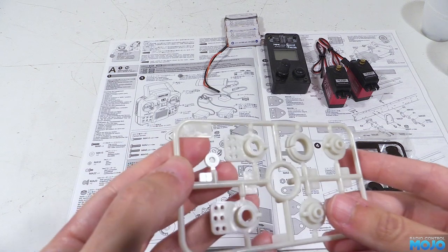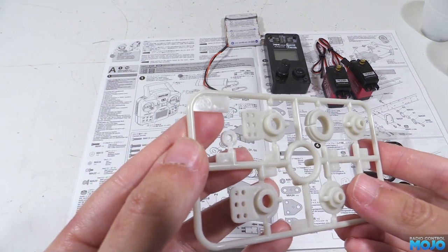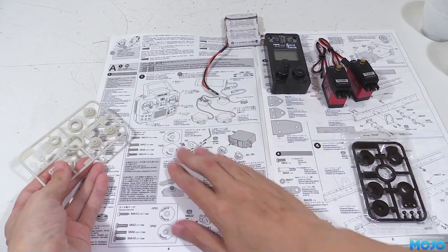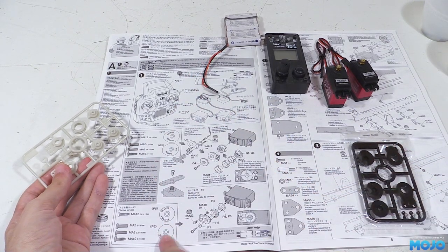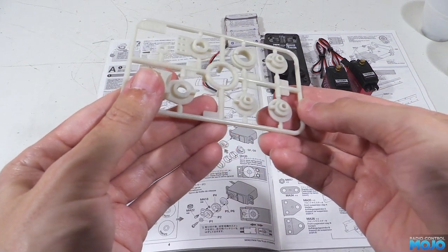Because there's a few different types of servo splines, there's two different bosses for each servo saver. One's marked Tamiya Futaba, and the other one Sanwa. The servos we have here are Futaba compatible with 25 teeth, so we need a Futaba boss.